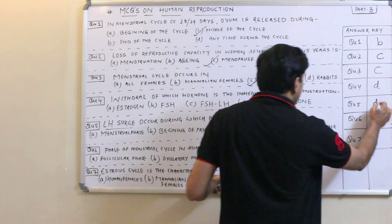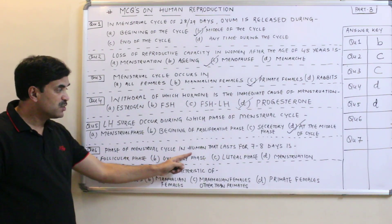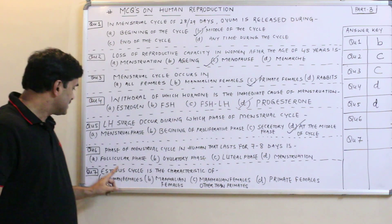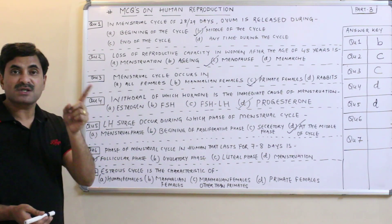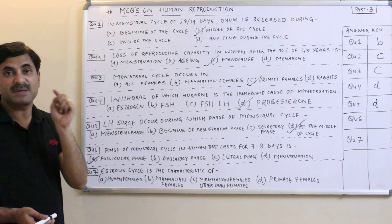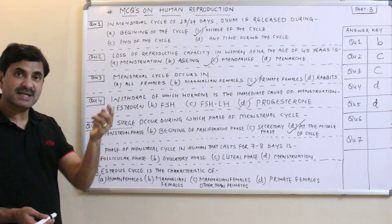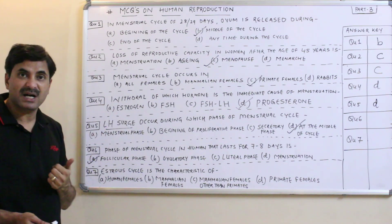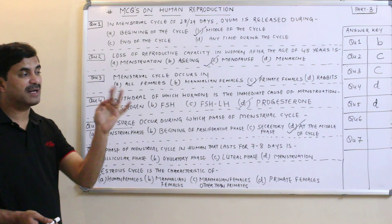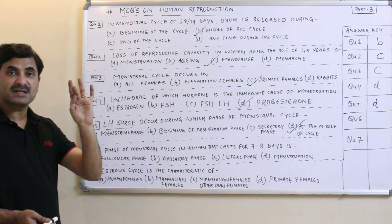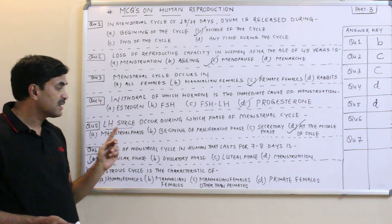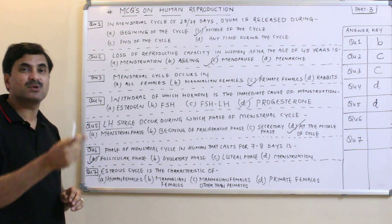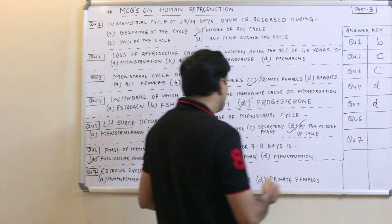Question number six: which phase of the menstrual cycle in humans lasts for seven to eight days — follicular phase, ovulatory phase, luteal phase, or menstrual phase? The first five days are the menstrual phase. From day 6 to day 13 is the proliferative or follicular phase — that is about eight days. Day 14 is ovulation, followed by the luteal phase. So the answer is A — follicular phase.